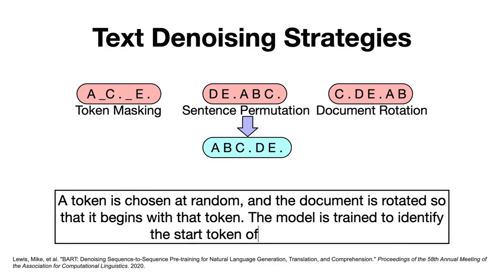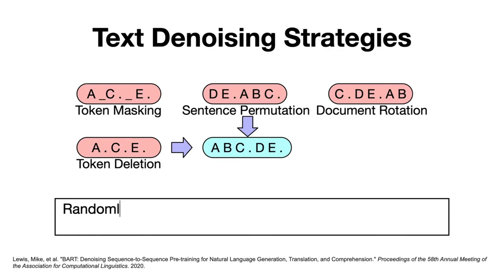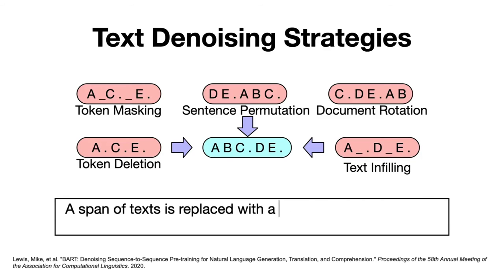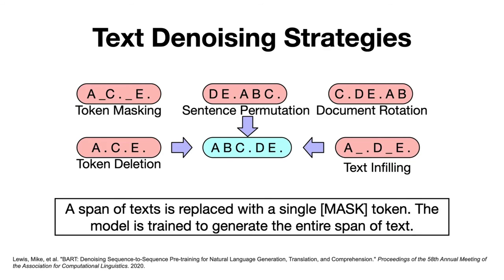Then the next method is document rotation, where a token is chosen at random and the document is rotated so that it begins with that token. Then the model is trained to identify the start of the document. Quite similar to the token masking method, we have the token deletion method. As the name suggests, this method involves randomly deleting tokens from the text. Then the model learns to infer the deleted tokens from the remaining context. And finally, we have text infilling. Here, not a single token but a span of text is replaced with a single mask token. The model is then trained to generate the entire span of text.